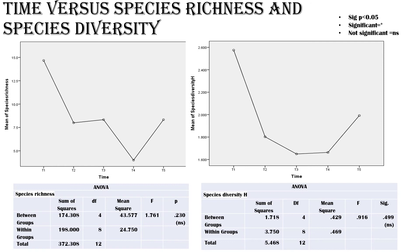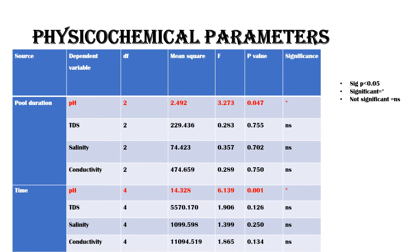Time one had the most species richness because this is when species were establishing their populations. As time went on, some matured into adult phases and dispersed from the pools. Many were active dispersers, and many were predatory species, so species richness and diversity reduced with time as some were preyed upon and their populations were eliminated from the rock pools.